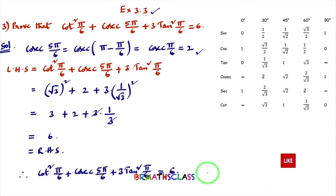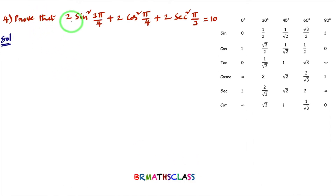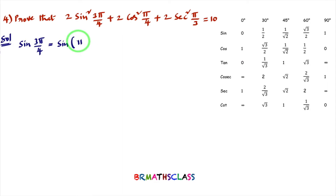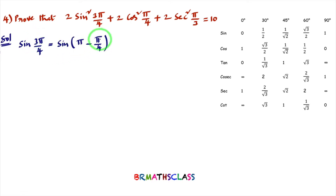Now we will see the solution for the 4th question: 2·sin²(3π/4) + 2·cos²(π/4) + 2·sec²(π/3) = 10. We need to prove this. The value of sin(3π/4) is not directly in the trigonometry table, so first I will calculate it. We write 3π/4 = π − π/4, since 4π − π = 3π by 4.